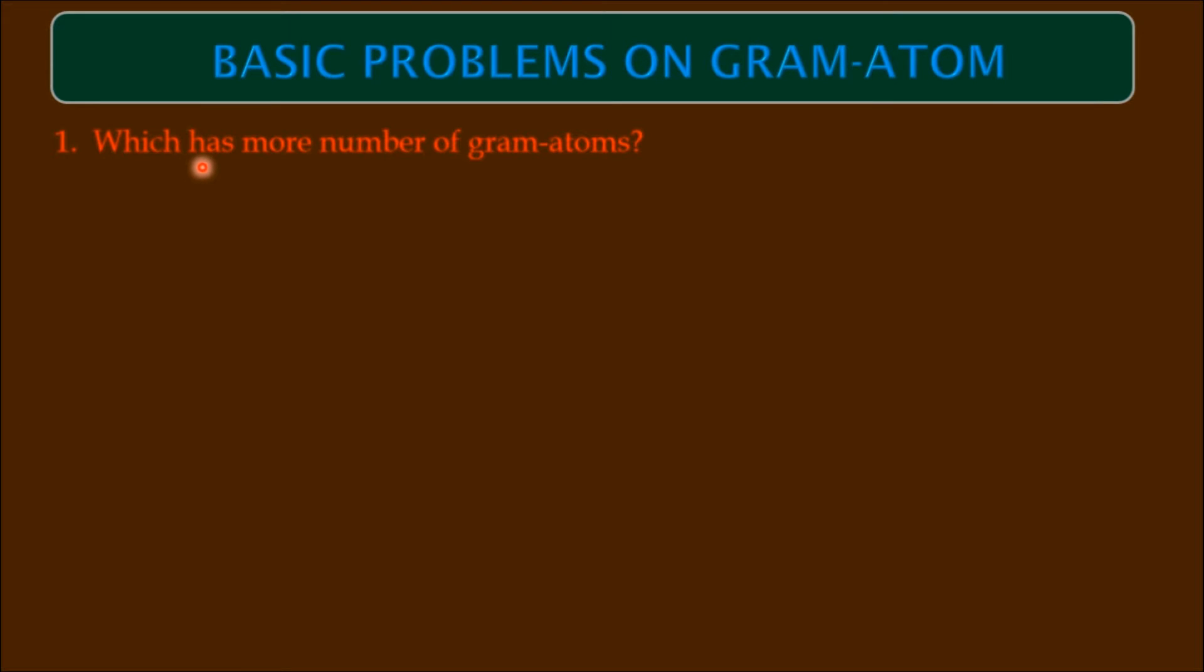Question number 1: which has more number of gram atoms? See the options: 400 grams of calcium (atomic weight = 40), 46 grams of sodium (atomic weight = 23), 560 grams of iron (atomic weight = 56), 20 grams of hydrogen (atomic weight = 1). These are the options given. At the same time, atomic weights are also indicated in the problem.